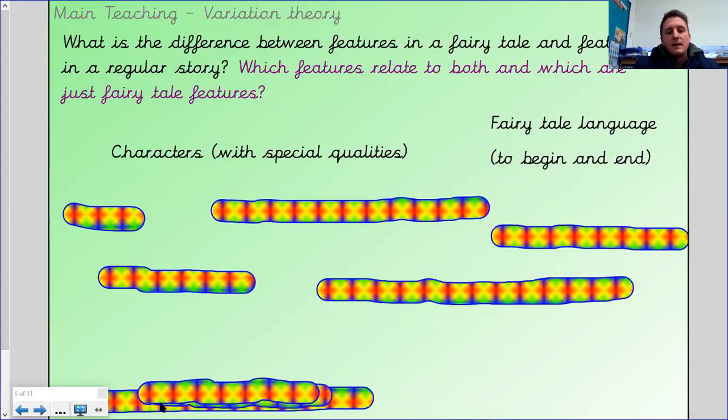Next one, fairy tale language. So let's think about how a fairy tale might start and how a fairy tale might end. Have pause the video if you want to have a quick chat about that. There's some common ways in which fairy tales start and fairy tales end, like Babe's Three Little Pigs. Once upon a time is a classic way to start a fairy tale. How about how to end it then? You'd be quite right if you said something along the lines of, they lived happily ever after. All right.